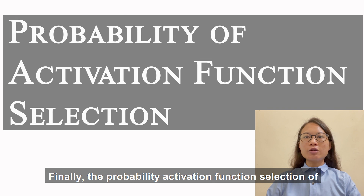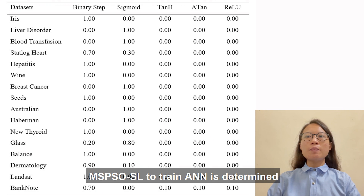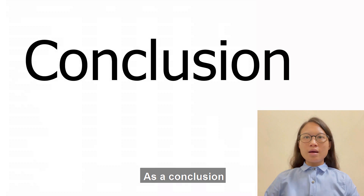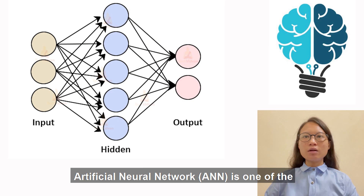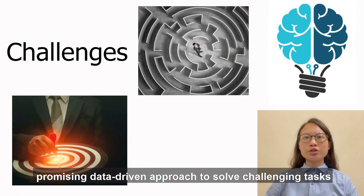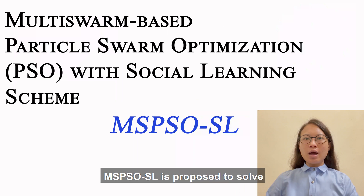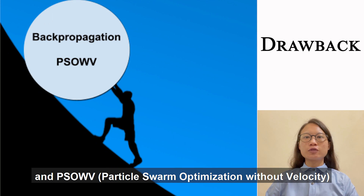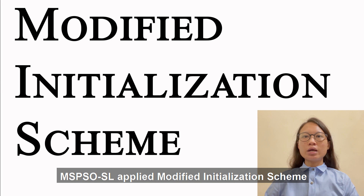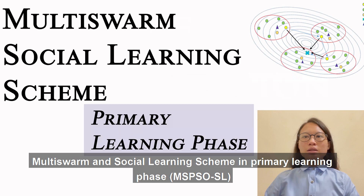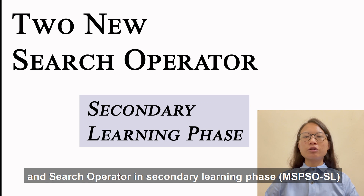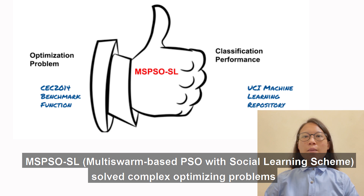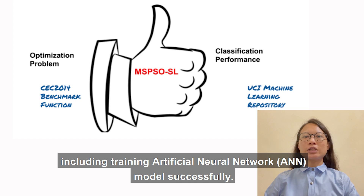Finally, the probability of activation function selection of MS-PSO-SL to train ANN is determined. As a conclusion, ANN is one of the promising data-driven approaches to solve challenging tasks by simulating the behavior of the human brain. MS-PSO-SL is proposed to solve the drawbacks of backpropagation and PSO-WV. MS-PSO-SL applies a modified initialization scheme, multi-swarm and social learning scheme in the primary learning phase, and search operators in the secondary learning phase. From the results, MS-PSO-SL successfully solved complex optimization problems including training ANN models. Thank you.